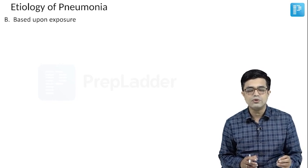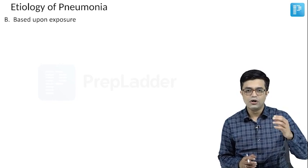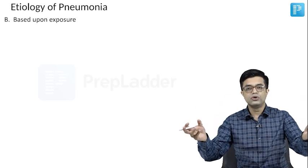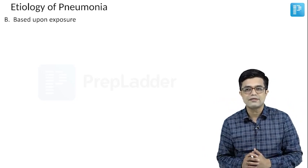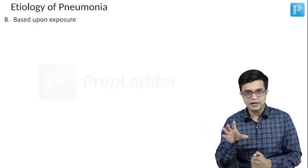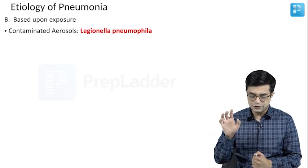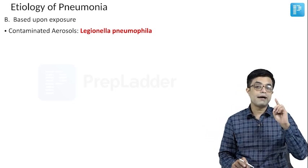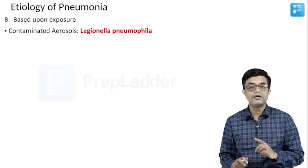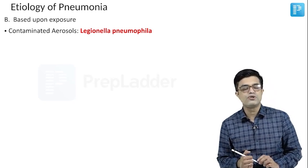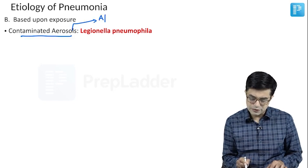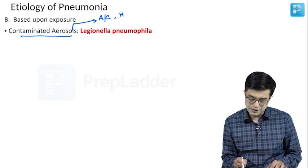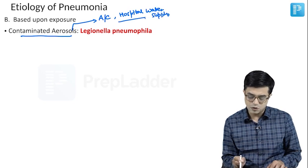If you have a clinical MCQ scenario that mentions a child who had history of exposure to something and then developed pneumonia a few weeks later, asking for the likely organism — this is how the question will be asked. There is a huge table in Nelson; I have edited it and added relevant information. If the question says there was exposure to contaminated aerosols, the likely organism will be Legionella pneumophila, which causes Legionnaires' disease. Contaminated aerosols can typically happen in air conditioner chambers, air-conditioned areas, or hospital water supply.